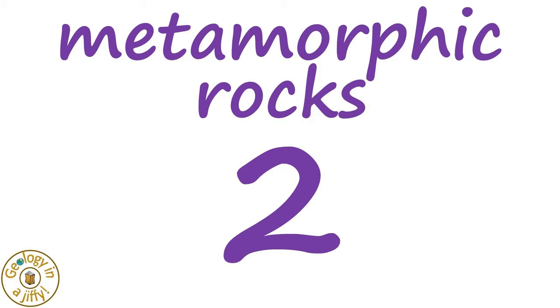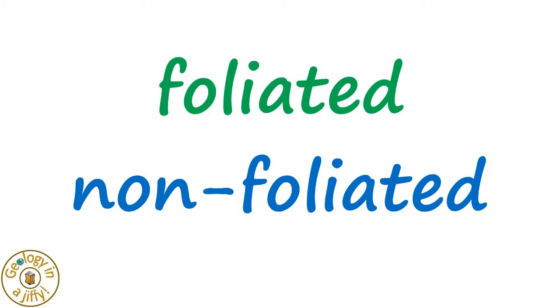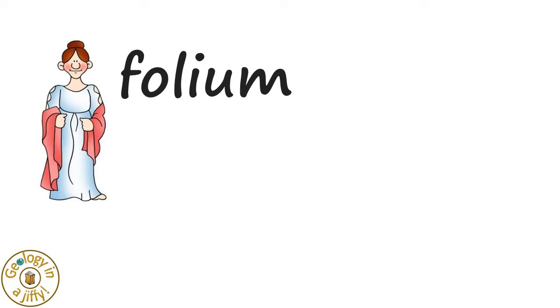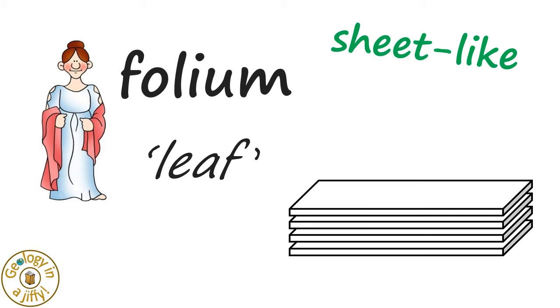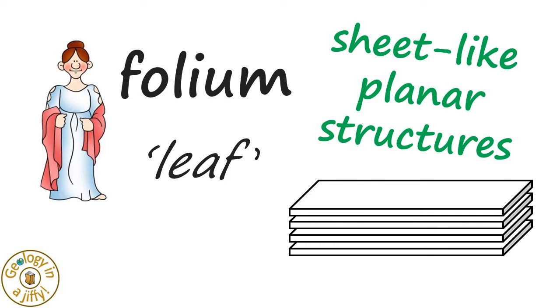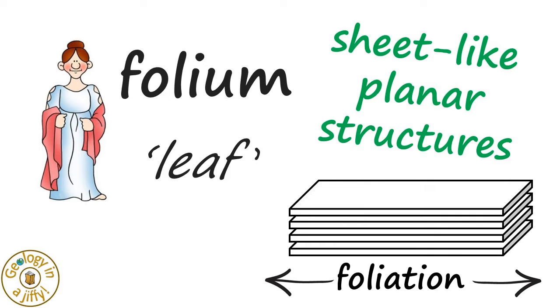Metamorphic rocks can be divided into two main types, being foliated and non-foliated. Foliated comes from the ancient Greek of folium, meaning leaf, which are sheet-like planar structures that give us the foliation.